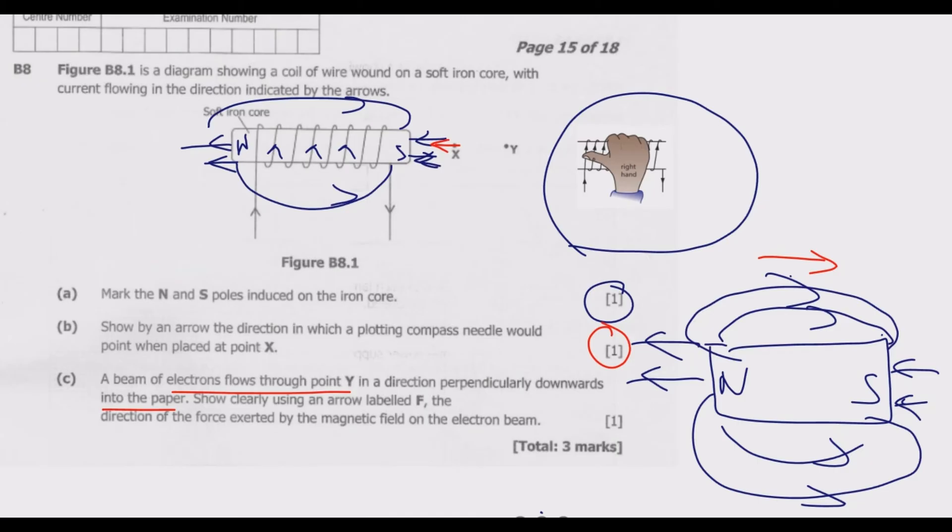What you notice is since the electrons are entering the paper, it means the current is coming out of the paper. If you use your hand where the first finger is pointing in the direction of the magnetic field, which is this direction, then the second finger is pointing in the direction of current.